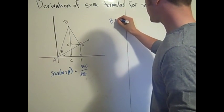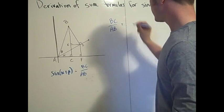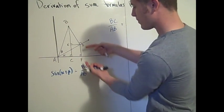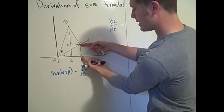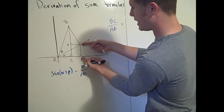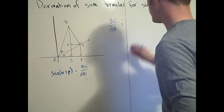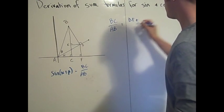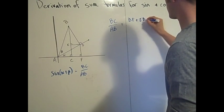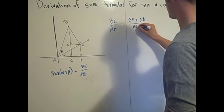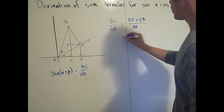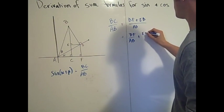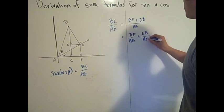BC over AB is equal to — well, BC, this length right here — is the same as the length of this segment plus the length of this segment, namely DF plus BE. So this is the same as DF plus EB over AB, which equals DF over AB plus EB over AB.